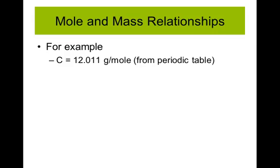For example, if I look at carbon on the periodic table, its average atomic mass is 12.011, and that means that's how many grams there would be if we had one mole. If we looked at any element on the periodic table and looked at its average atomic mass, that would tell us how many grams were in one mole of that substance.